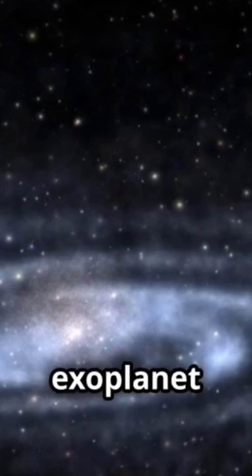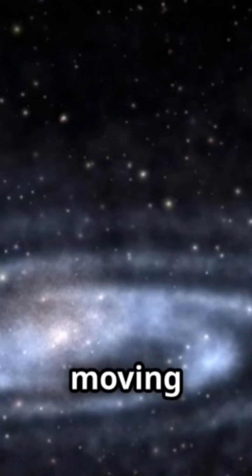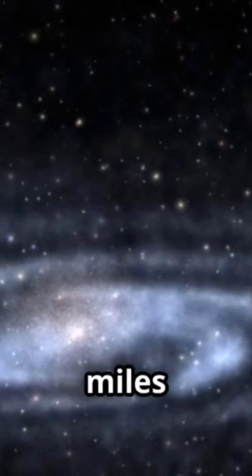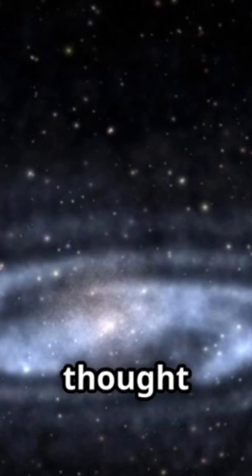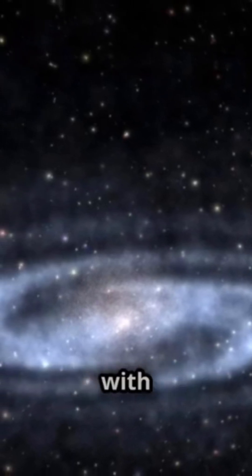NASA scientists may have just discovered one of the most mind-boggling exoplanet systems ever observed. A hypervelocity star, moving at an incredible 1.2 million miles per hour, over 1.9 million kilometers per hour, is thought to be dragging a Neptune-like planet with it.